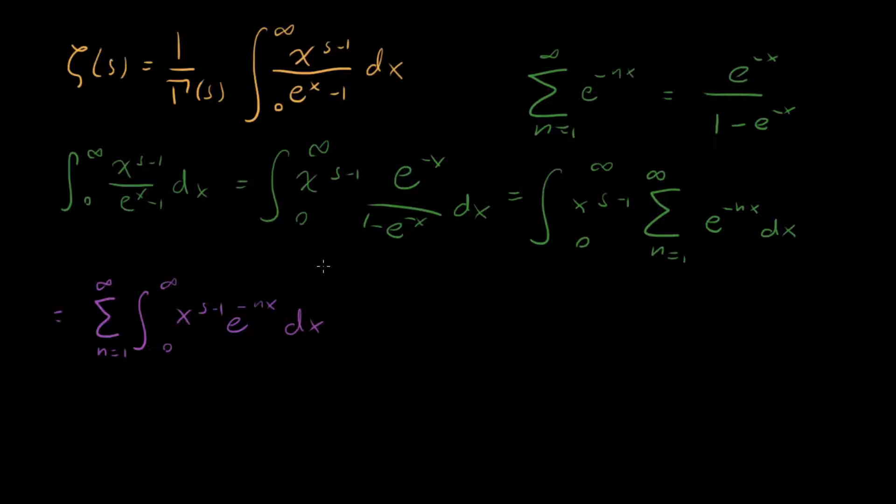But that suggests to us that we should use a change of variables, which has u equaling nx, so we can get that exponential right. And du equal to n dx. And if we do this, what do we get?